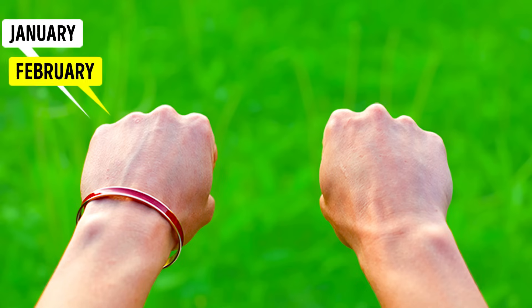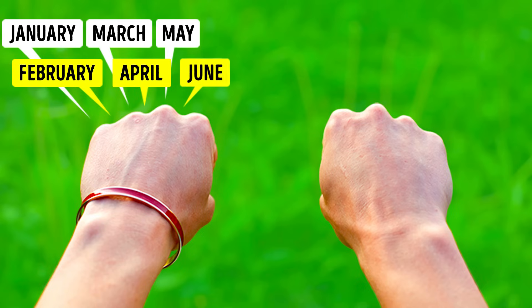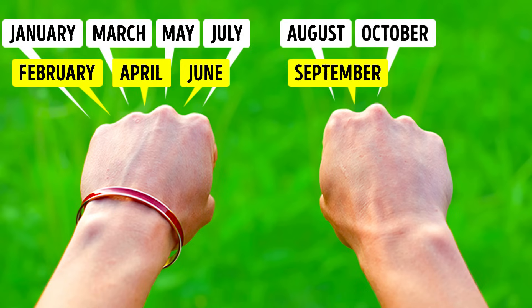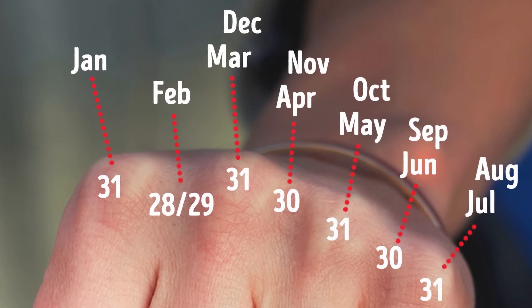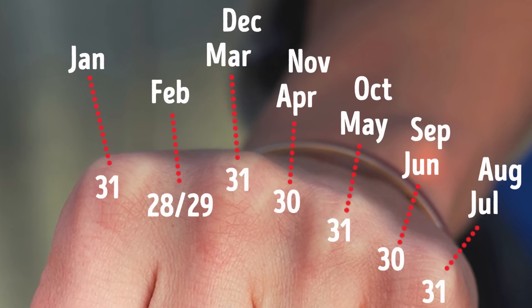January, February, March, April, May, June, July. Now the right hand: August, September, October, November, and December. If the month is on the knuckle bump, there are 31 days. If it's on the gap, 30 or less.